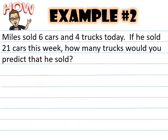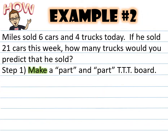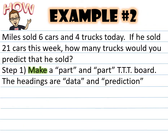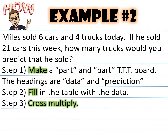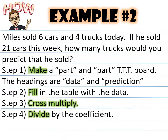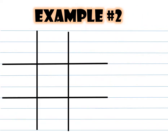Example number two: Miles sold six cars and four trucks today. If he sold 21 cars this week, how many trucks would you predict he sold? Step one: make a part and part tic-tac-toe board — not part and total, it is part and part. The headings are data and prediction. Step two: fill in the table with the data. Step three: cross multiply. Step four: divide by the coefficient.